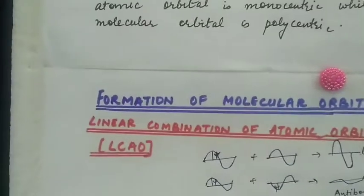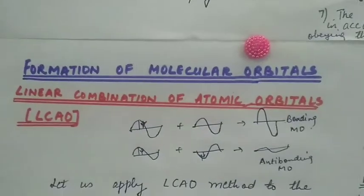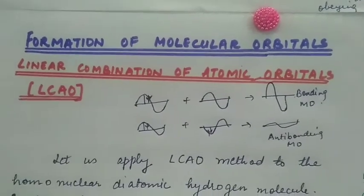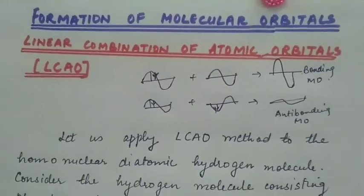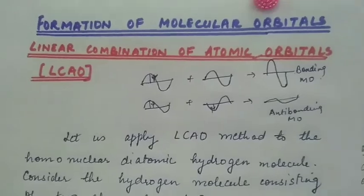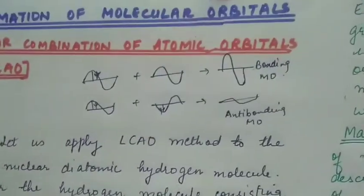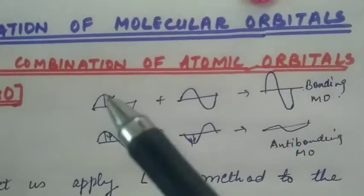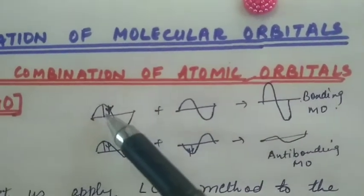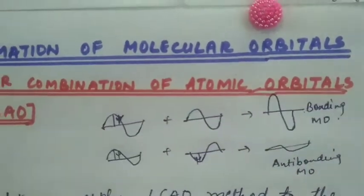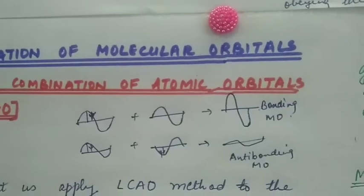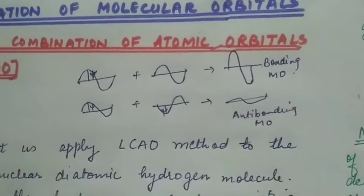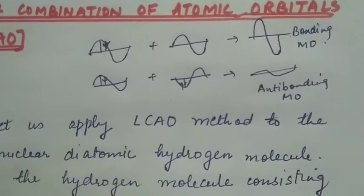The formation of molecular orbitals can be approached by the Linear Combination of Atomic Orbitals (LCAO) method. According to wave mechanics, the atomic orbitals can be represented by the wave function psi, which is the amplitude of the wave function. These are obtained from the solution of the Schrödinger wave equation.